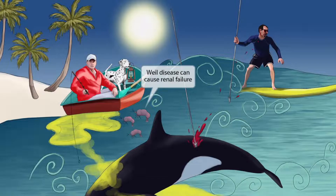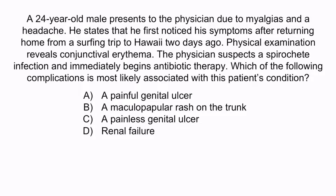Now that we've covered the image, let's review with a question. A 24-year-old male presents to the physician due to myalgias and a headache. He states that he first noticed his symptoms after returning home from a surfing trip to Hawaii two days ago. Physical examination reveals conjunctival erythema. The physician suspects a spirochete infection and immediately begins antibiotic therapy. Which of the following complications is most likely associated with this patient's condition? A: a painful genital ulcer. B: a maculopapular rash on the trunk. C: a painless genital ulcer. Or D: renal failure.